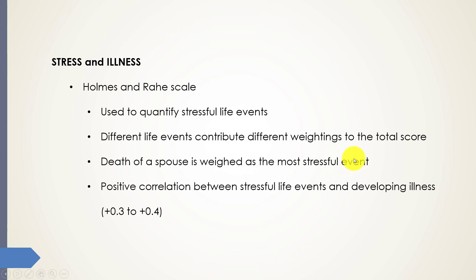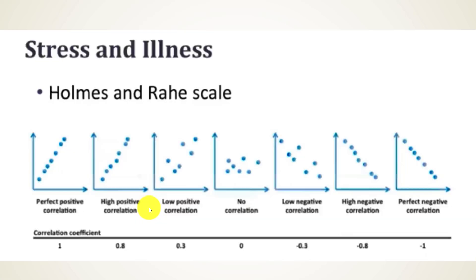As far as stress and illness, there is a positive correlation of plus 0.3 to plus 0.4. A positive correlation means that if one variable increases, so does the other. Looking at different types of correlation: a correlation coefficient of 1 represents a perfect positive correlation, where the dots show very little scatter — one variable goes up and the other goes up as well. For example, increased cholesterol and heart disease.